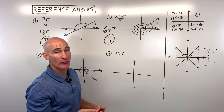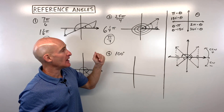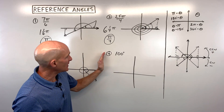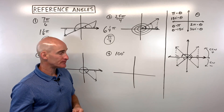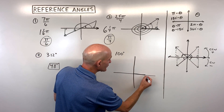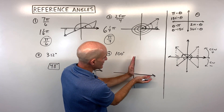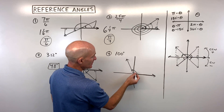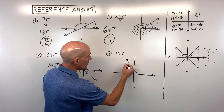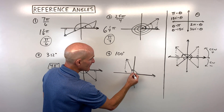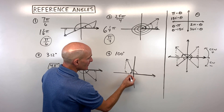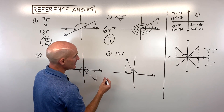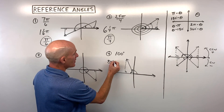Remember, the reference angle is always positive and always between 0 and pi over 2 in radians, or 0 and 90 in degrees. For number 4: 100 degrees. Start along the positive x-axis, rotate 90 degrees — a right angle — plus 10 more degrees brings us to 100 degrees. Drop a perpendicular to the x-axis, and you can see it takes 80 degrees more to reach that x-axis, so 80 degrees is our reference angle.